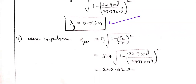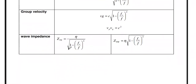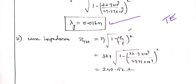Next, find ZTM, the wave impedance for TM mode. For TM mode the formula is ZTM = η × √(1 − (Fc/f)²), whereas for TE mode it is η divided by that square root. Here with η = 120π ≈ 377 Ω, the wave impedance ZTM = 240.52 ohms.